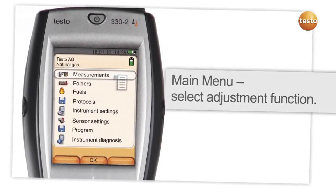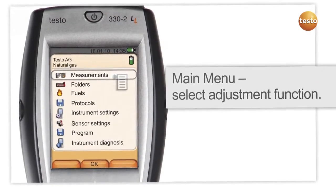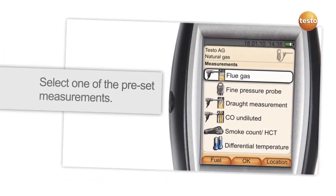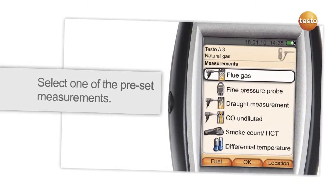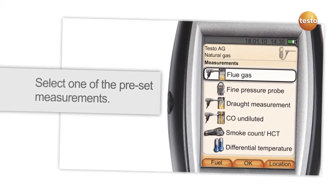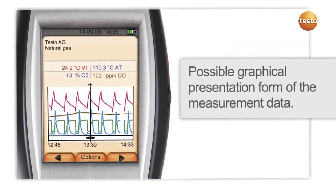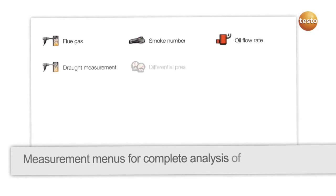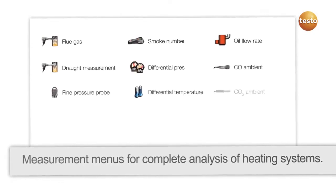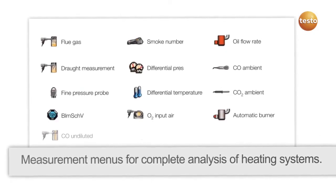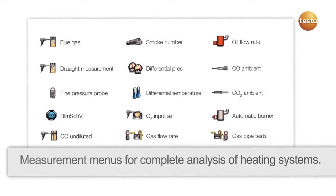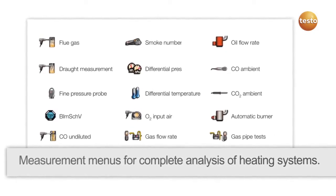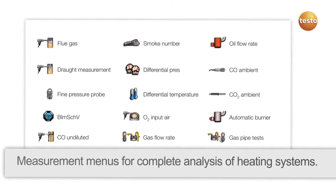There are special measurement menus available. The measurement data can be displayed in different graphics and be analyzed easily and quickly. The extended measurement menus allow a comprehensive analysis of the heating system. The measurement data are clearly visualized on the display.